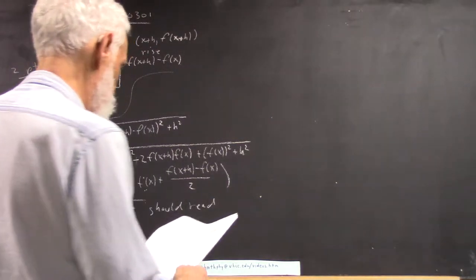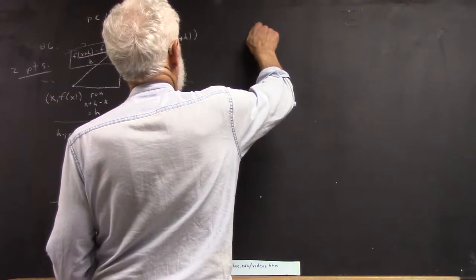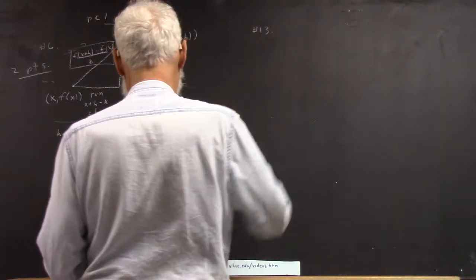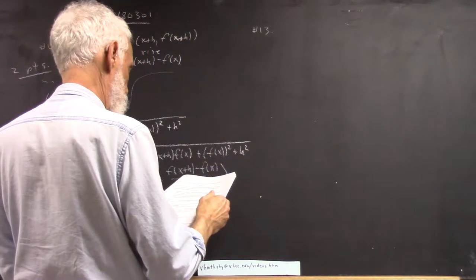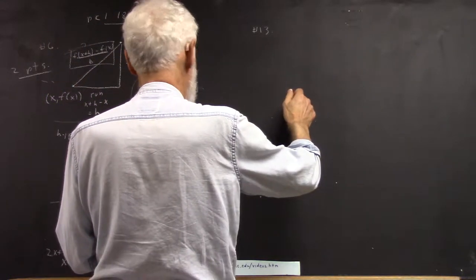Okay, on this problem, this would be number 13. What do we have? We have the lines x equals negative 5 and x equals 4.